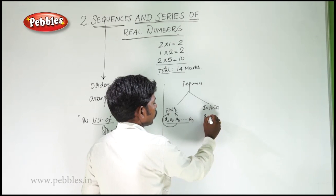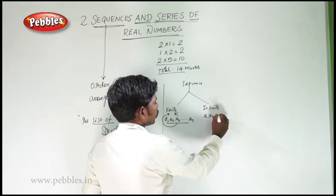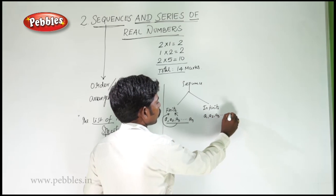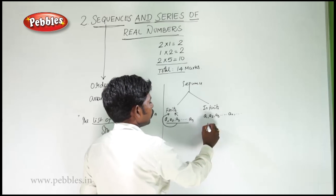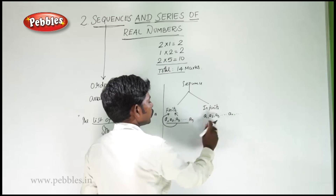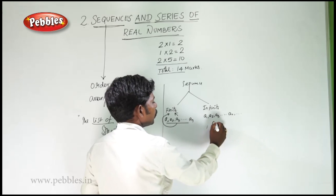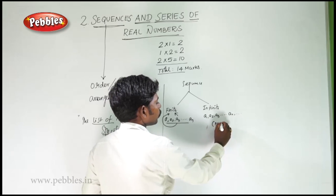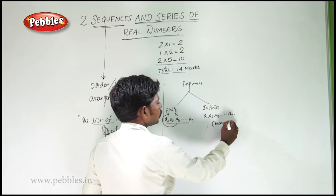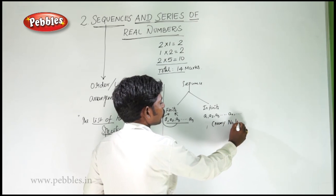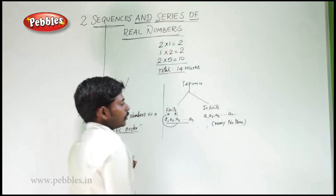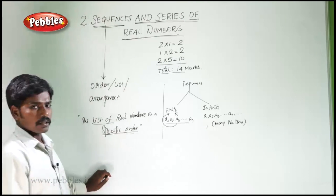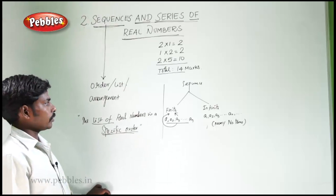If a1, a2, a3, and so on to an and so on — with many number of terms — it is called an infinite sequence.